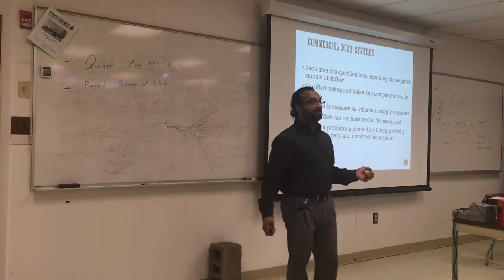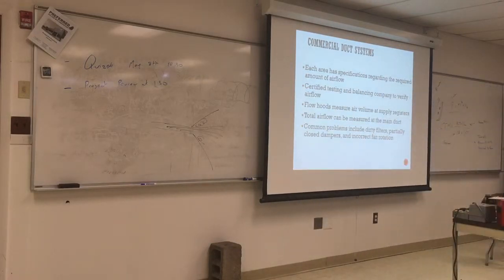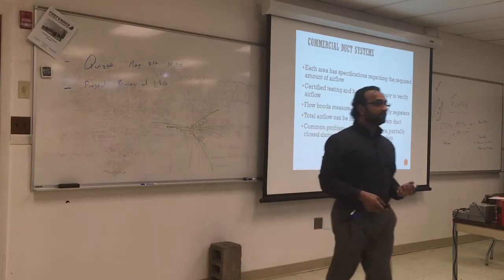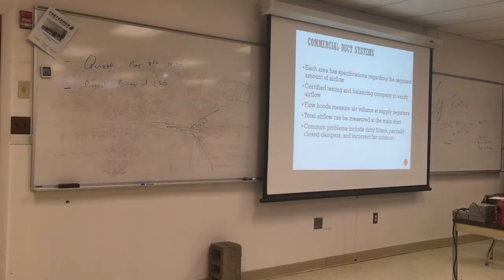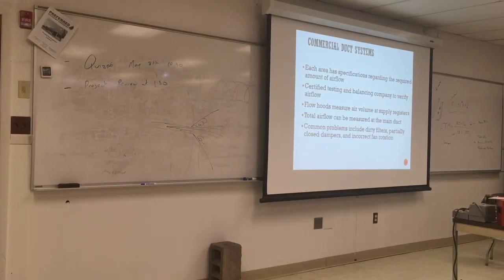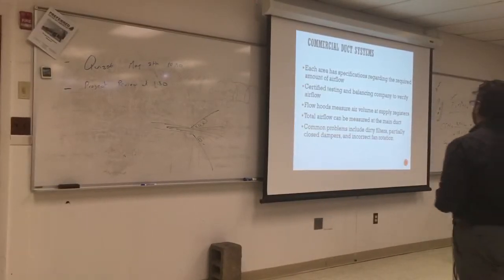Flow hoods measure the air going at the supply register. If you were in the TAB class, probably you used the hood to cover the register and give you the air flow. Total airflow can be measured in the main duct. How do you measure the flow in the main duct? You don't have a velocity meter or a hood to put in there. It's a big duct. You put the manometer inside and you measure the pressure, the velocity pressure. Then you calculate the air velocity.